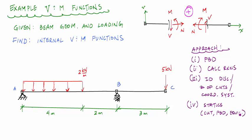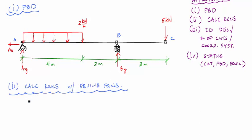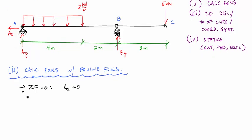Here is my free body diagram. At A I have a vertical reaction A_y and a horizontal reaction A_x, and at B I have a vertical reaction B_y — three unknowns. Applying equilibrium: sum of forces in the horizontal gives A_x equals zero. I'll solve for moments about point A to find B_y directly.